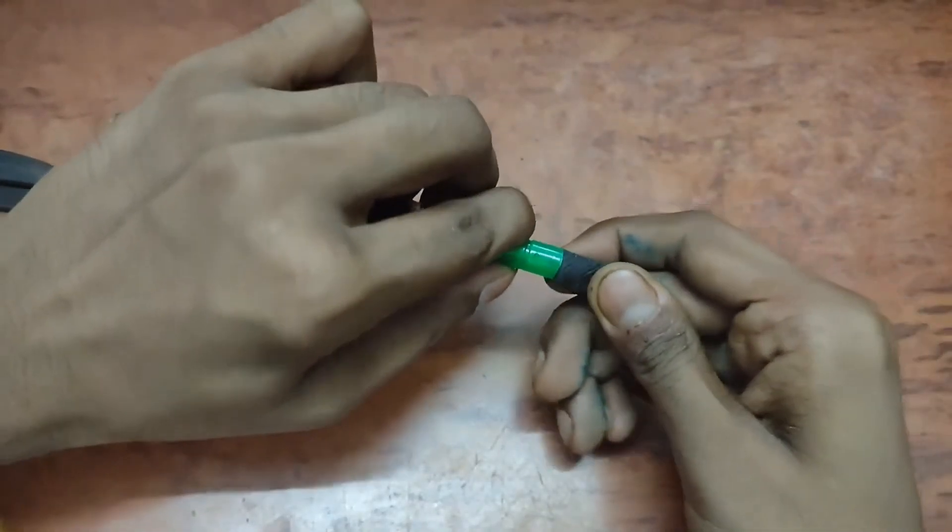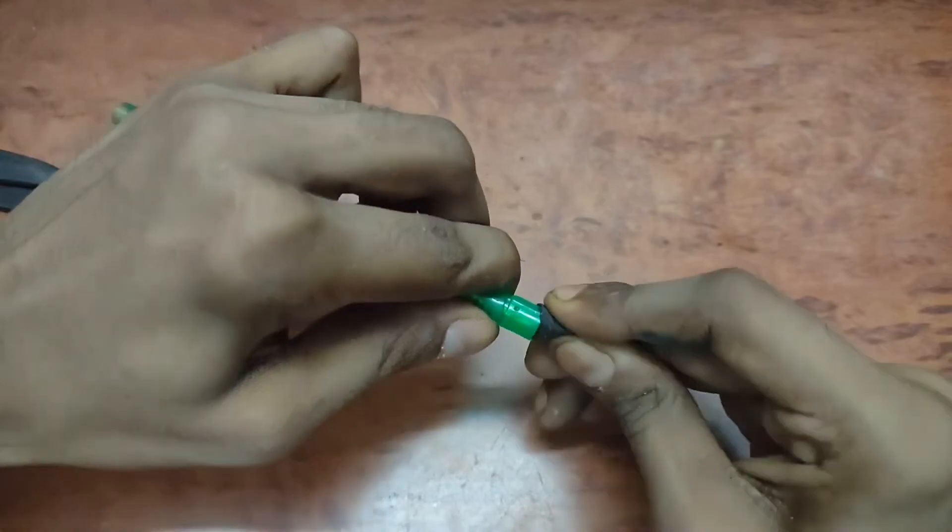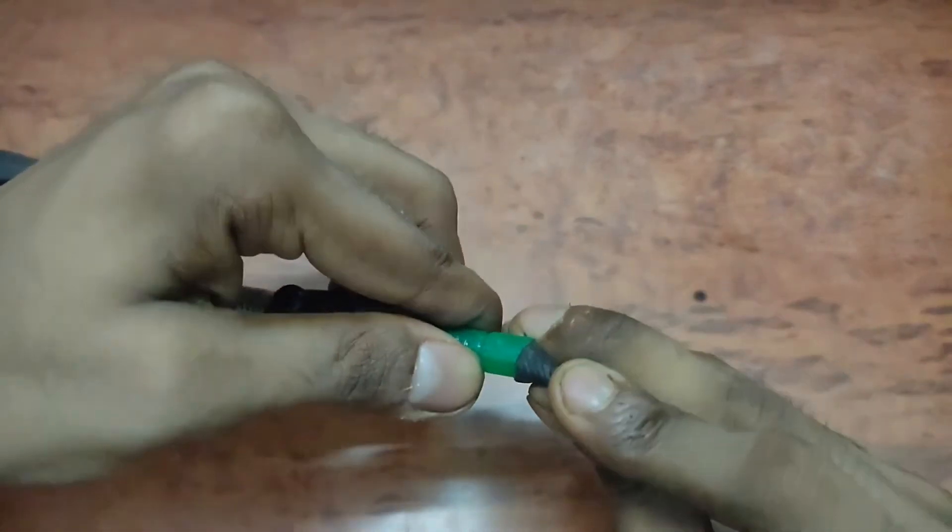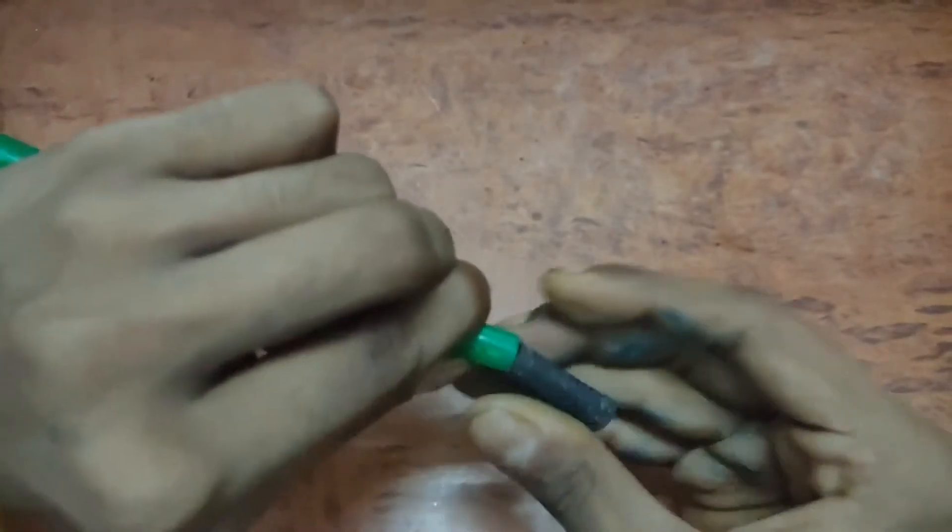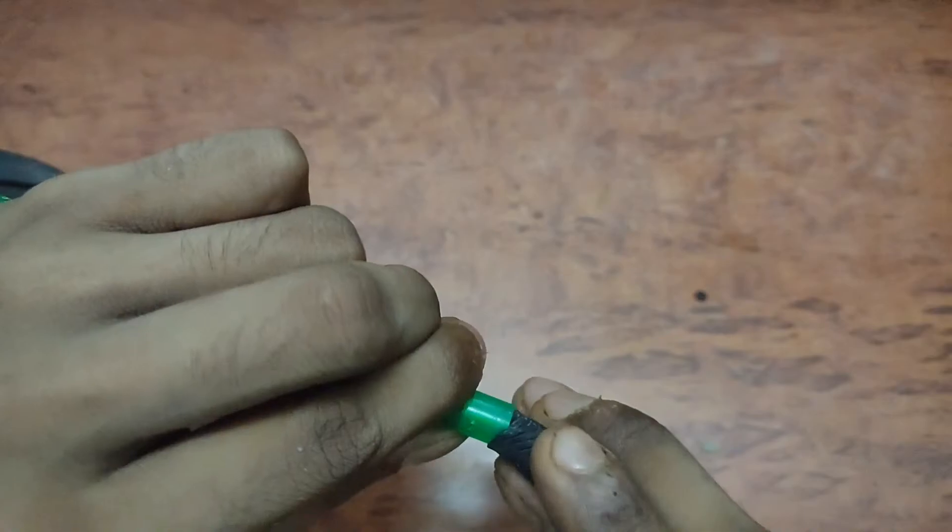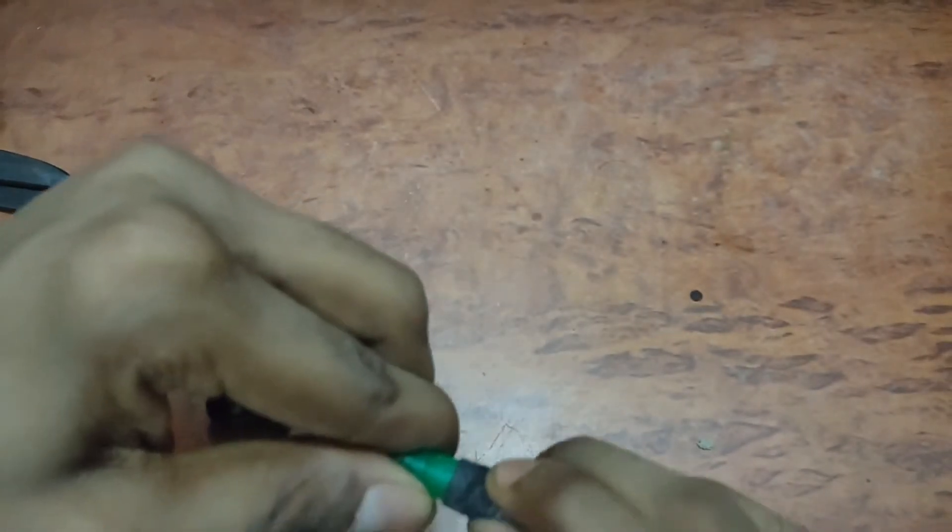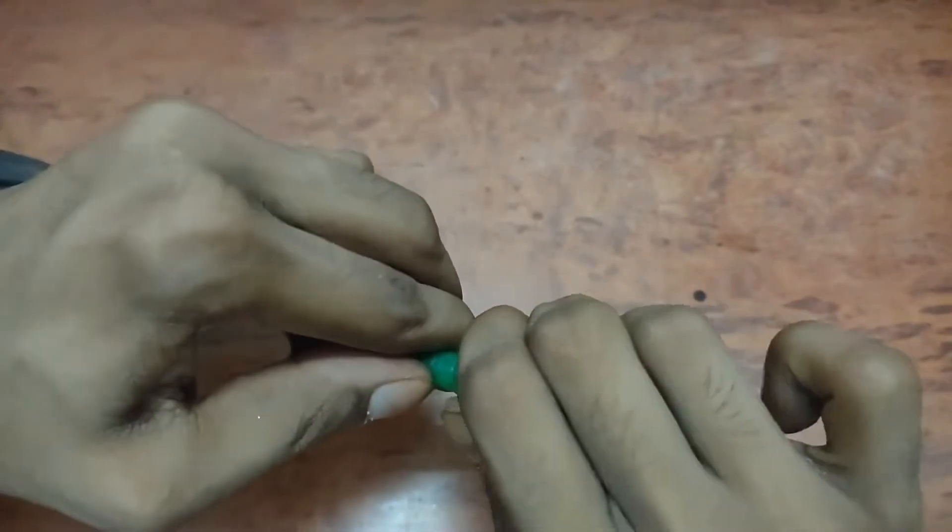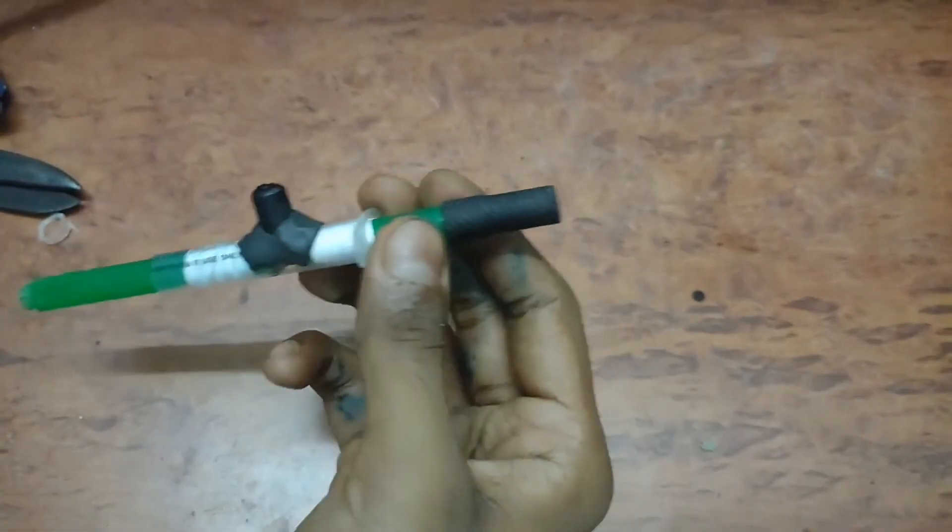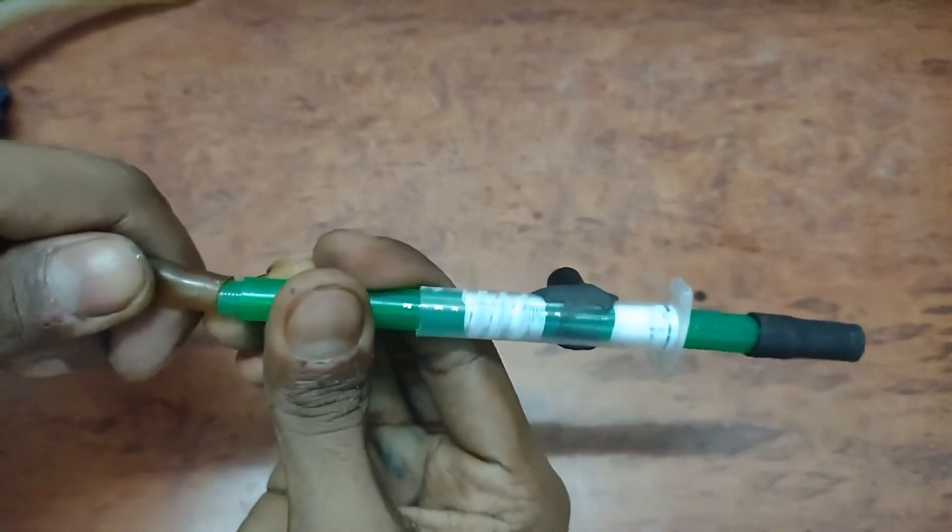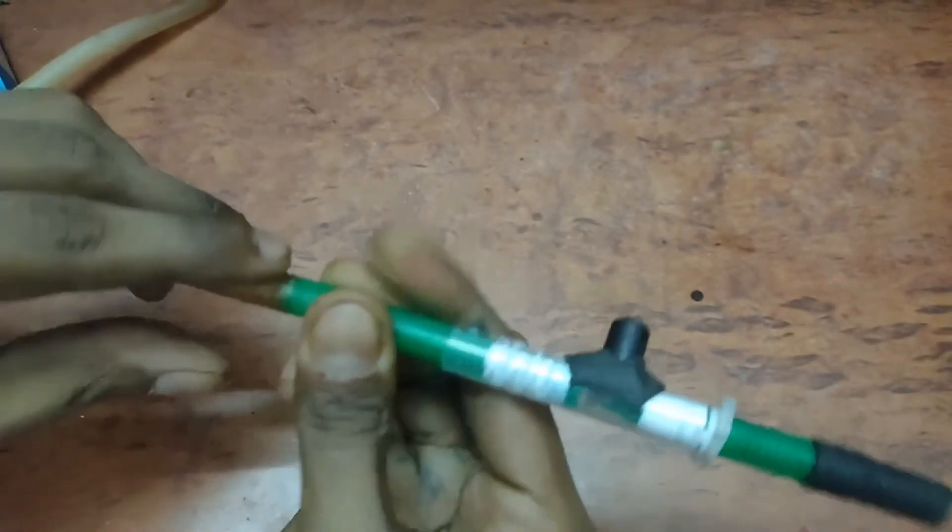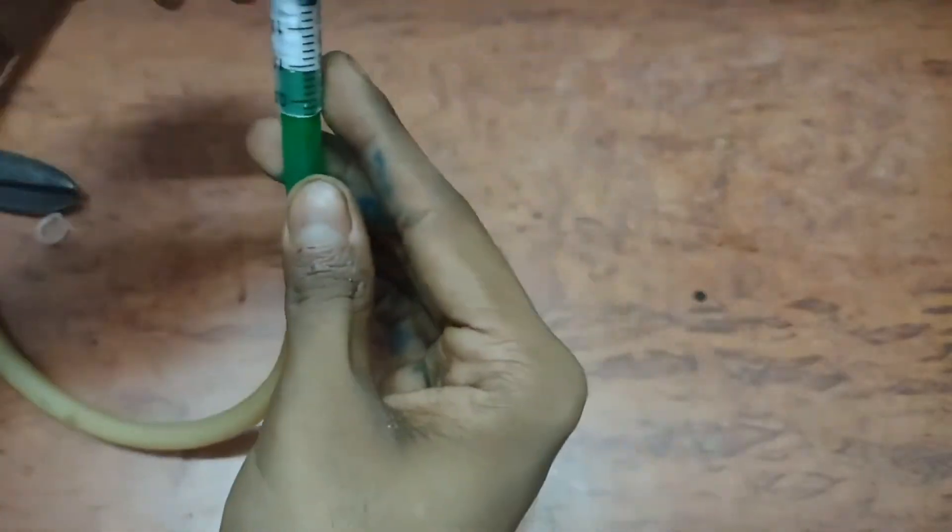On the top which is the water inlet, I will attach one rubber grip of a pen which will help me to connect my water aspirator to the nozzle of my laboratory. In the water outlet side I will attach one more pipe.